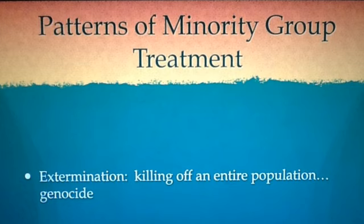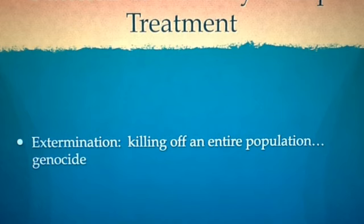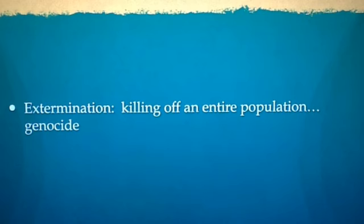Finally, we have extermination — the most extreme form of minority group treatment. It's genocide: the mass killing of an entire population, with the ultimate goal being the complete elimination of a minority group. This has been tried in history but has not been successful at achieving the ultimate goal. Think of Hitler, Slobodan Milosevic, the genocide in Rwanda, and certain actions against Native Americans in the U.S.